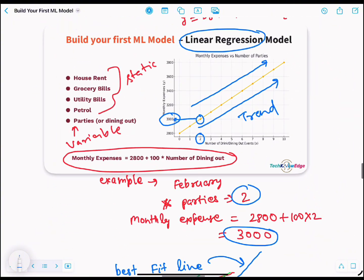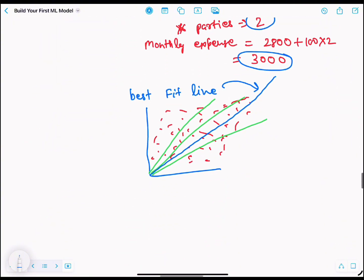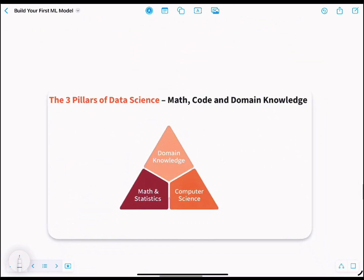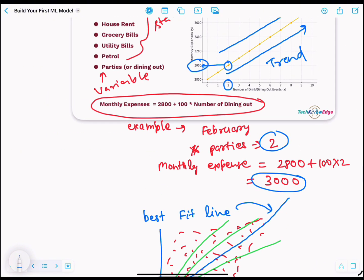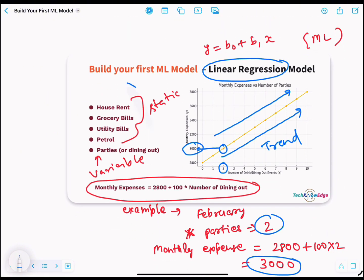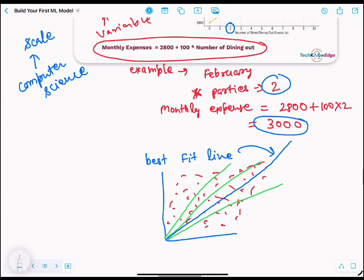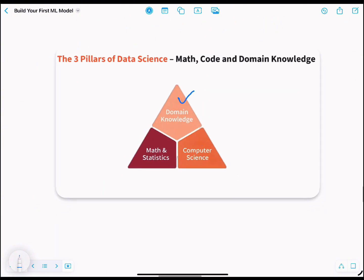So let's quickly recap what we just used to build this model. Did we use domain knowledge? Yes, we did - we knew that party expenses matter more than, say, shampoo. Math and statistics? To build the regression model. And computer science? Yes, to scale it across lots of data points.